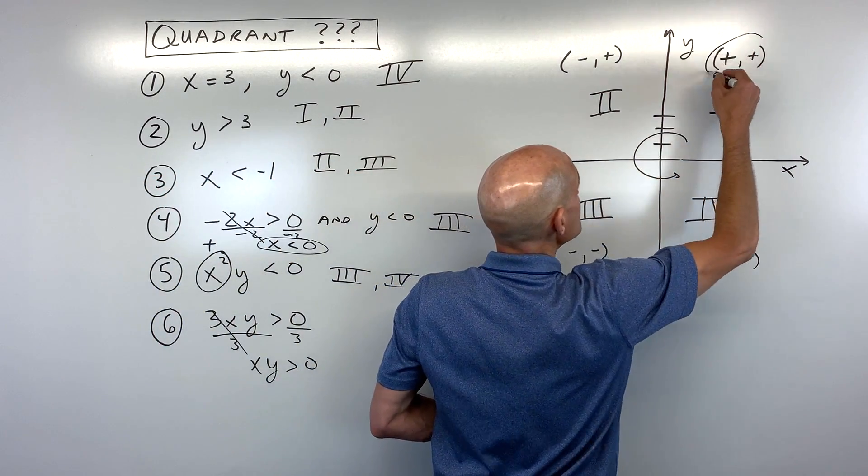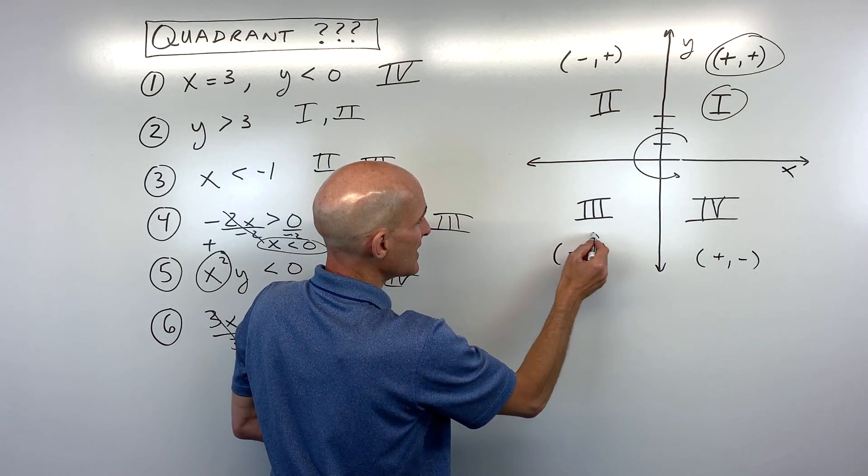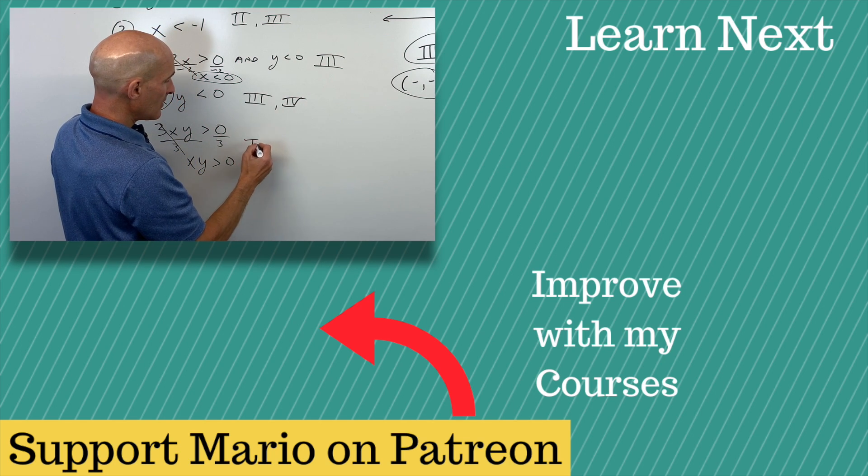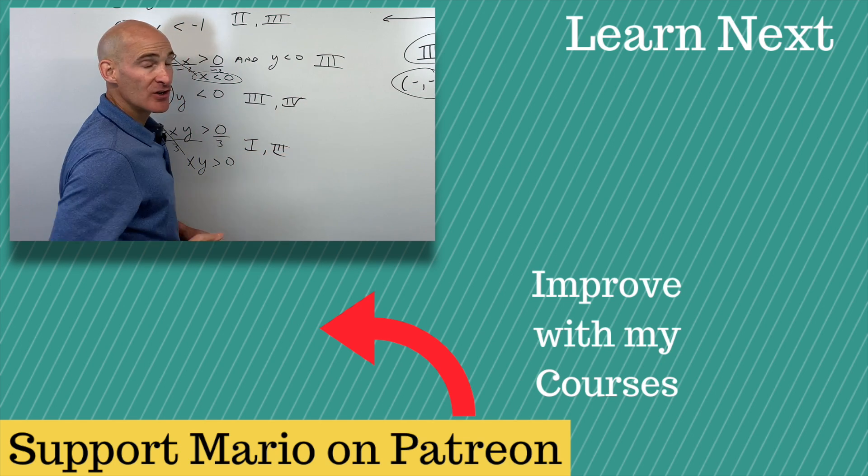Well, you can see a positive times a positive, that's positive. A negative times a negative, that's positive. So it looks like it's going to be in quadrants one and three. And you've got it.